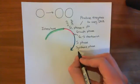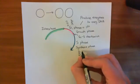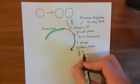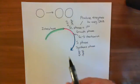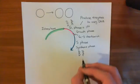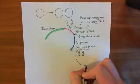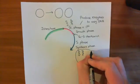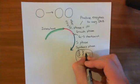In S phase, you actually copy the DNA — you replicate it — and you now have double the amount of genetic material in the cell. But the cell has not divided yet; it hasn't even split the nucleus. It's just a cell with a nucleus that has twice as much genetic material as it should.